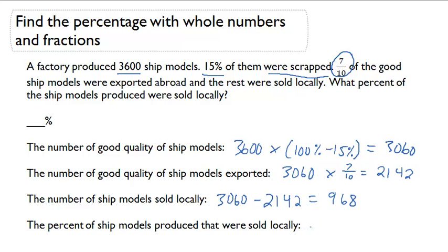Finally, I can figure out the percent of ship models produced that were sold locally. And I can do that with 968 divided by 3600, which was the number that was produced. And that's going to give me 25.5%.